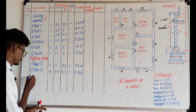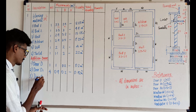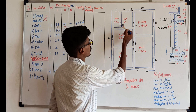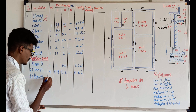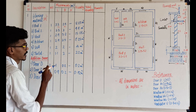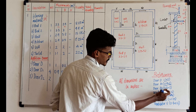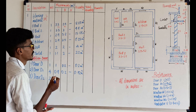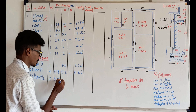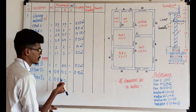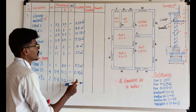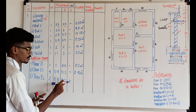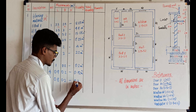Third: Door D2. How many D2 will be? 1, 2 — so 2 D2 will be. Length: 0.8m. The width is 0.2m. 2 x 0.8 x 0.2 which is equal to 0.32 m².